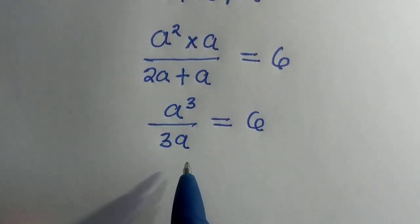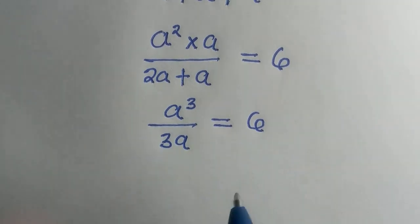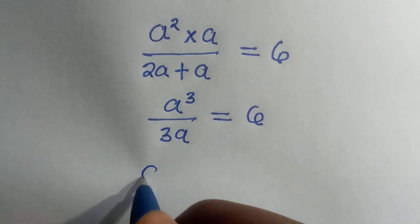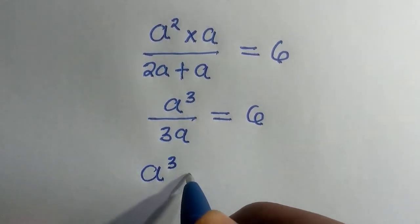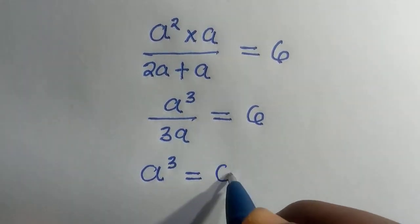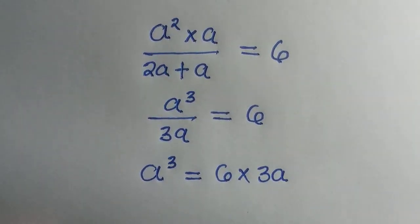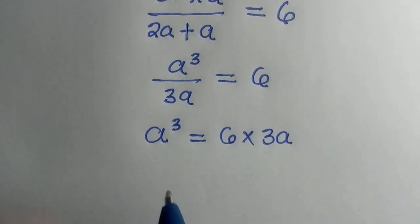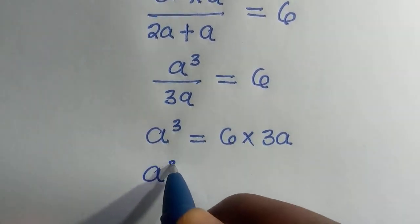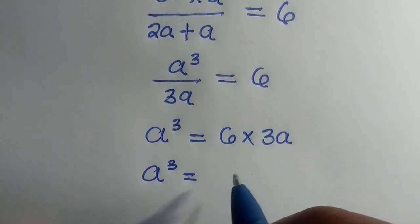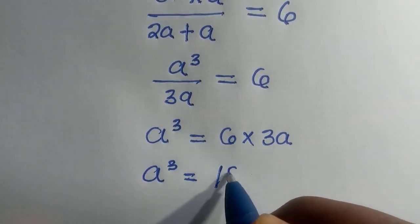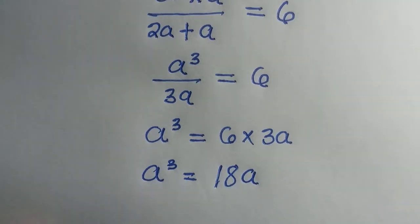Next, we are going to cross-multiply. So when we cross-multiply, we have a raised to the power of 3 equals 6 multiplied by 3a. Next, we have a raised to the power of 3 equals 6 multiplied by 3 is given as 18, then we have a.